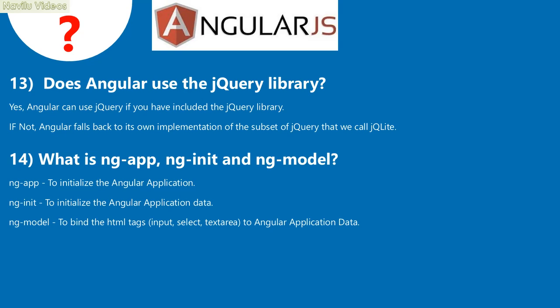What is ng-app, ng-init, and ng-model? ng-app is used to initialize the Angular application. ng-init is used to initialize the Angular application data. ng-model is used to bind HTML input tags — such as input, select, and textarea — to Angular application data.